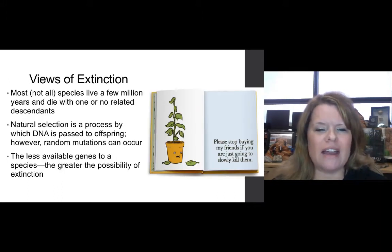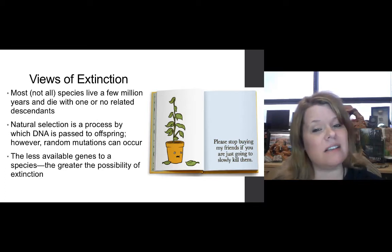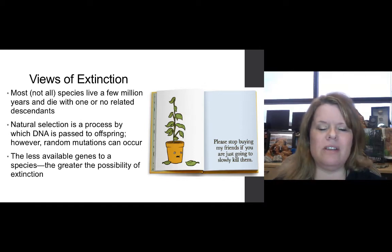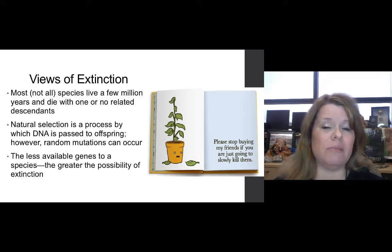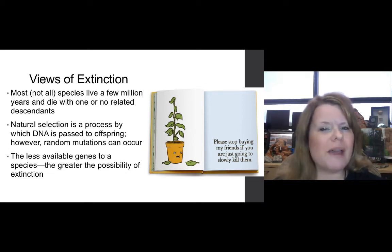Most — not all — species live a few million years and die with one or no related descendants. This has been a cause of about 95% of the life forms that have gone extinct throughout geologic past. Natural selection is a process by which DNA is passed on to offspring. Random mutations can occur and may be positive, negative, or neutral. Some mutations can have a detrimental impact on the ability of an organism to pass genes on. The less gene pool available to a species, the greater the possibility of extinction.